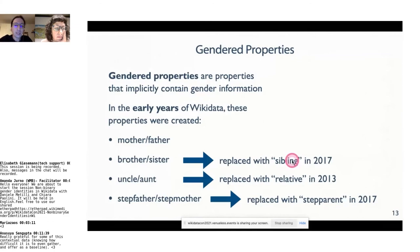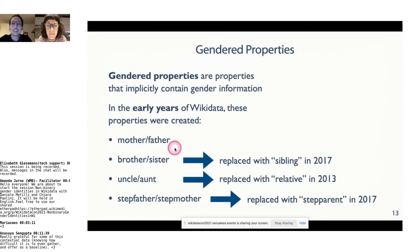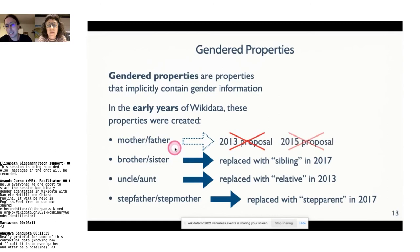I remember the discussions about this around 2016 — they were very long discussions with significant opposition to replacing brother and sister with sibling. I believe this had deep reasons not only about misconceptions of gender, but also related to the mechanisms through which decisions are taken in Wikidata. As for mother and father: there was a proposal in 2013 to replace them with 'parent' — it was rejected. Again in 2015 — rejected. Again in 2016 — rejected again. We still have mother and father today, which in my opinion is not good.